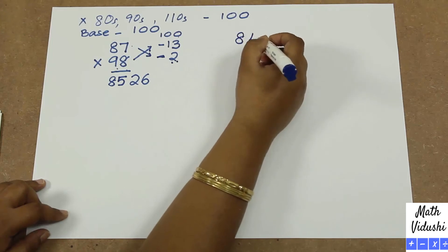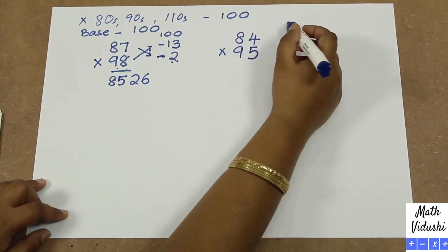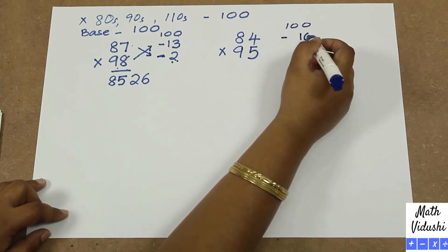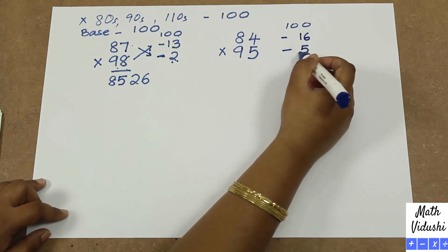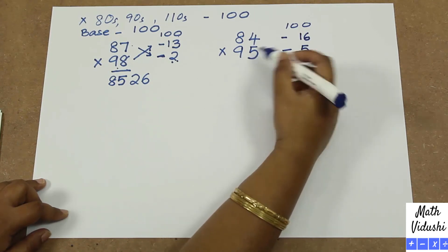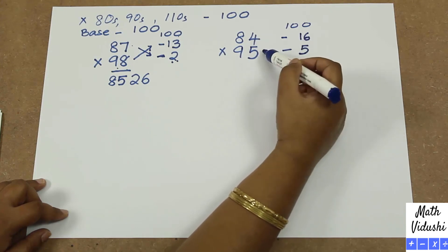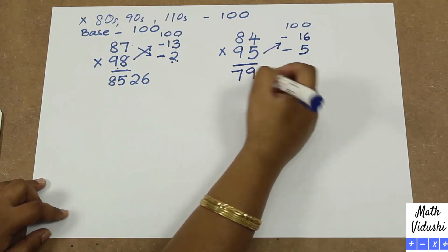84 multiplied by 95. So we will do 100 minus 16 is 84. 100 minus 5 is 95. So we will do either way: 84 minus 5, or 95 minus 16. Both are equal to 79.